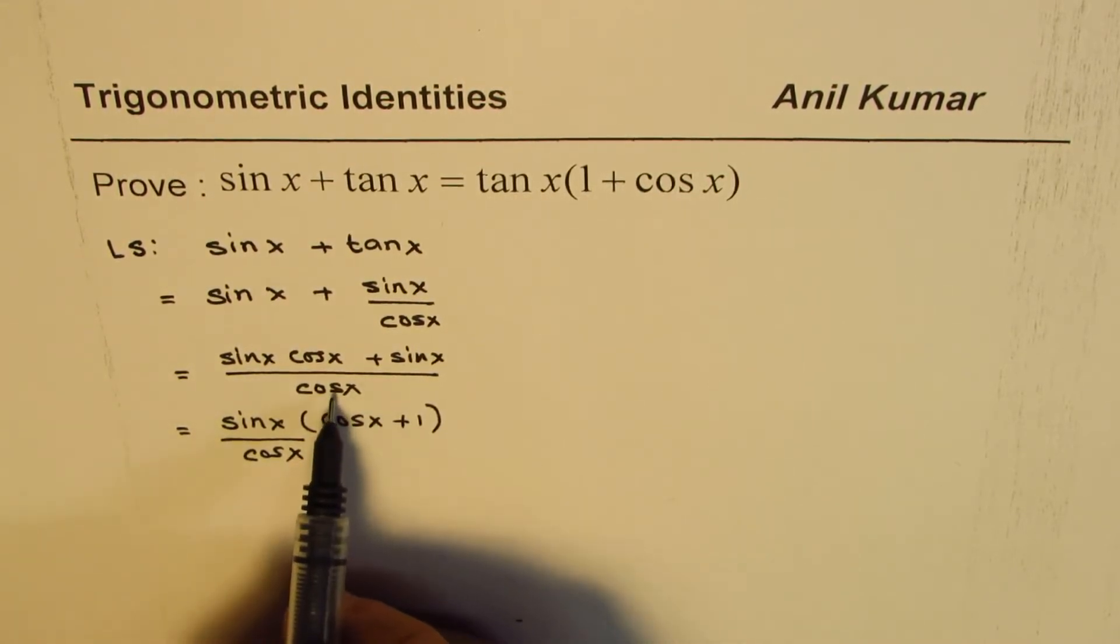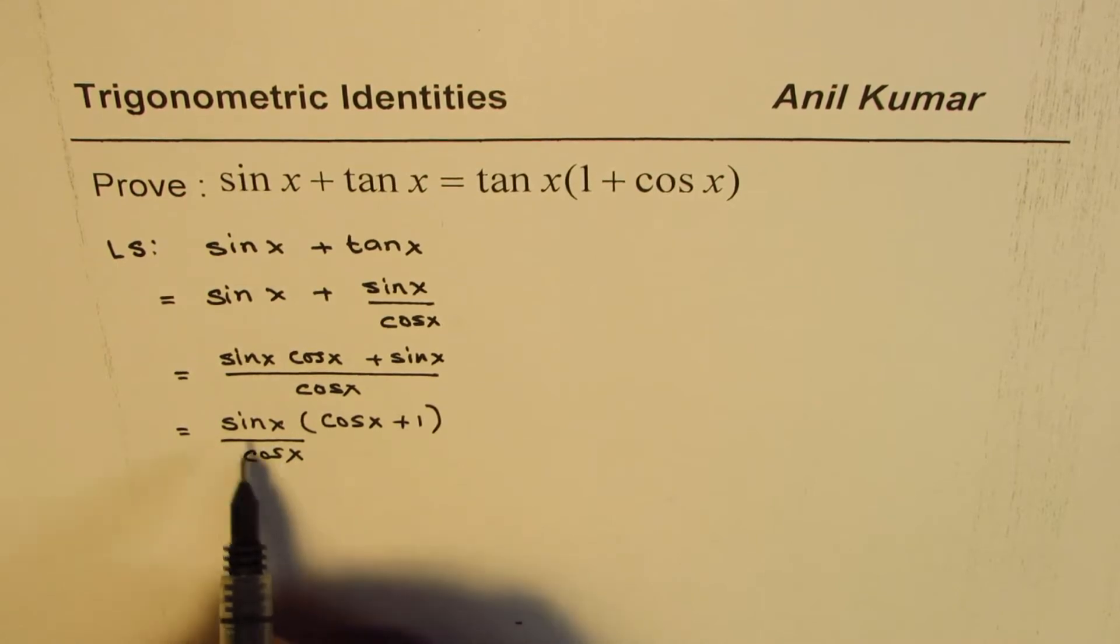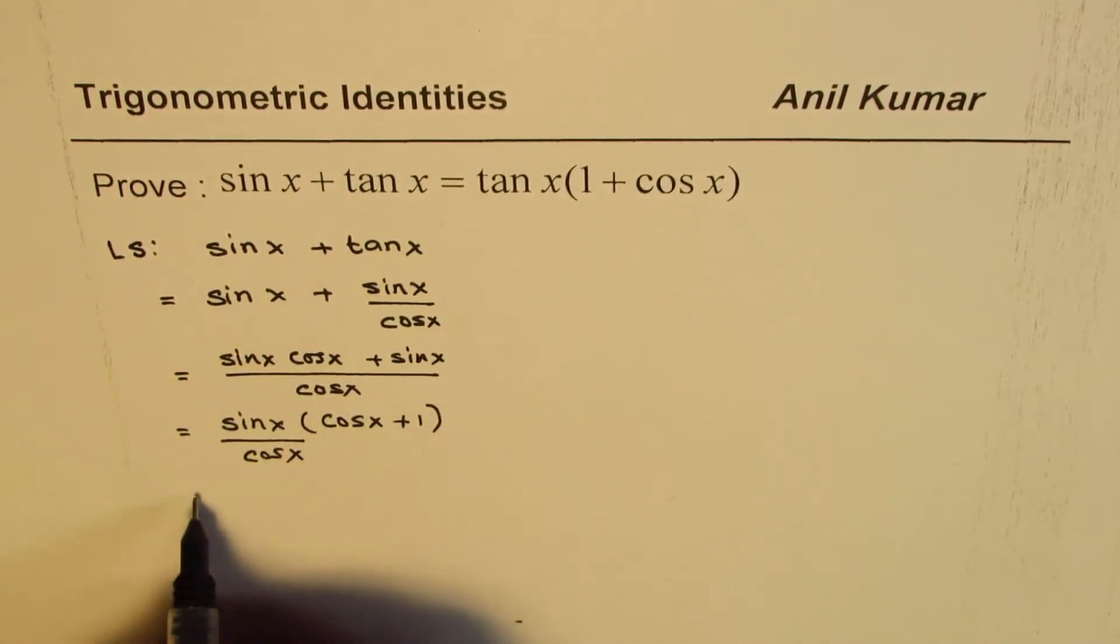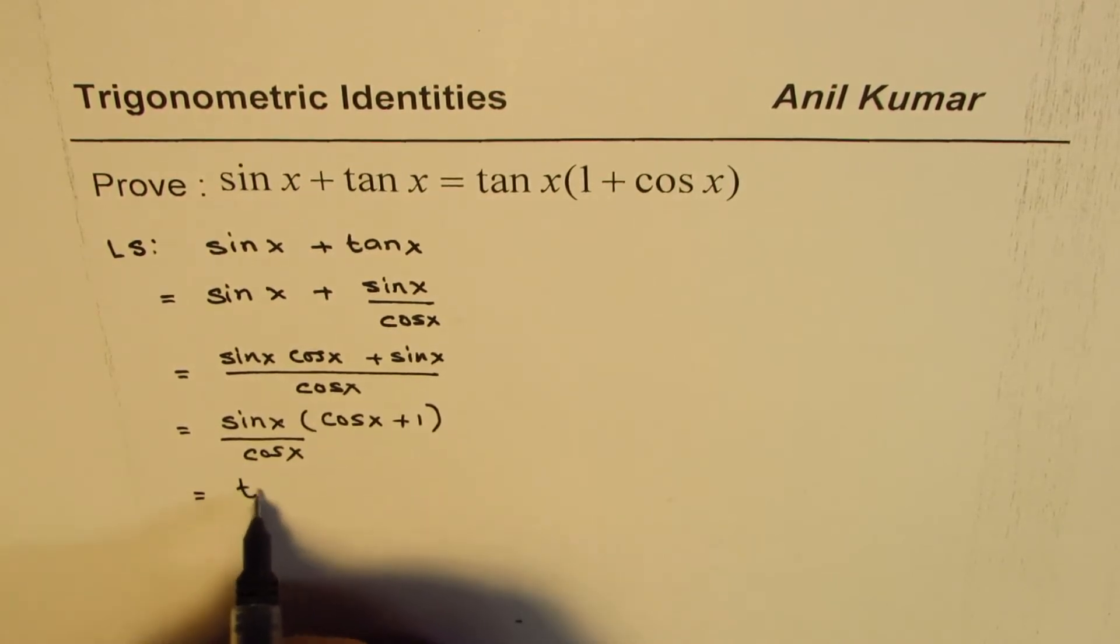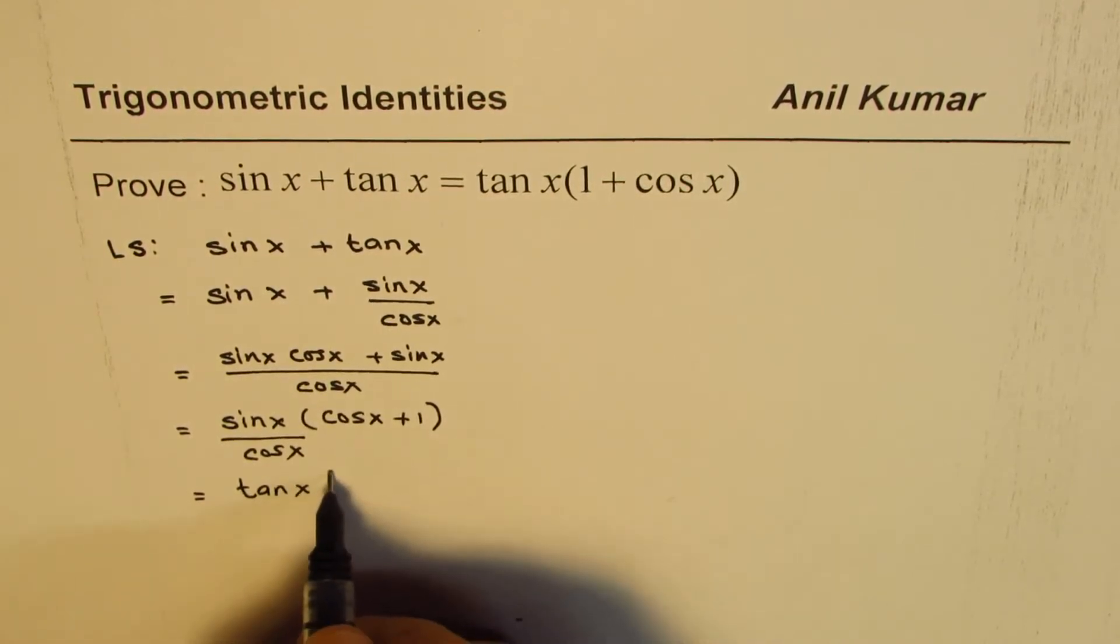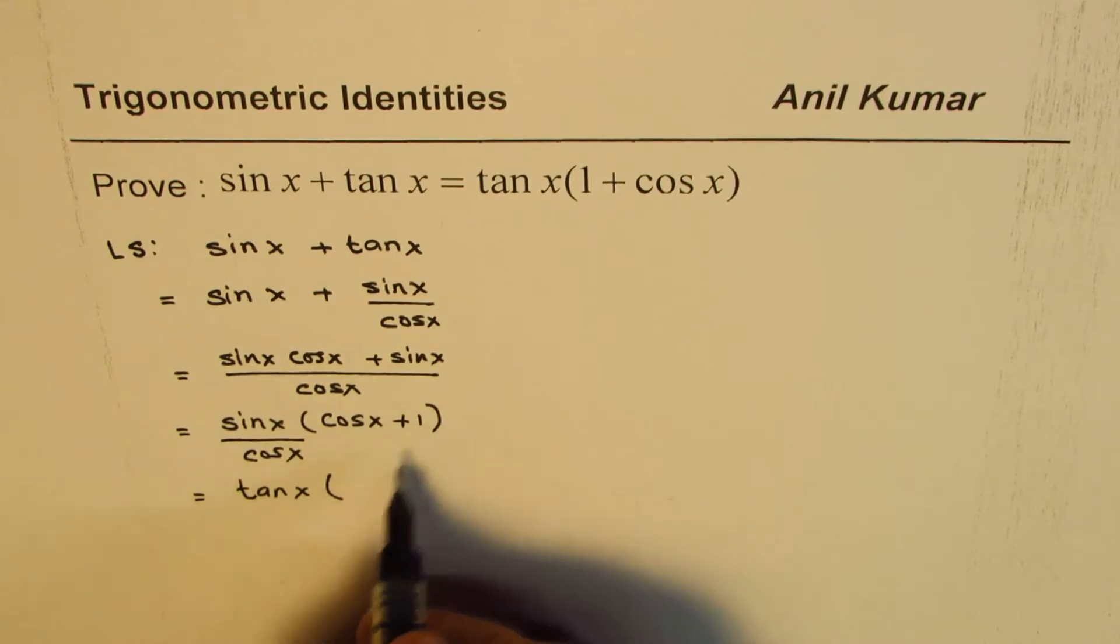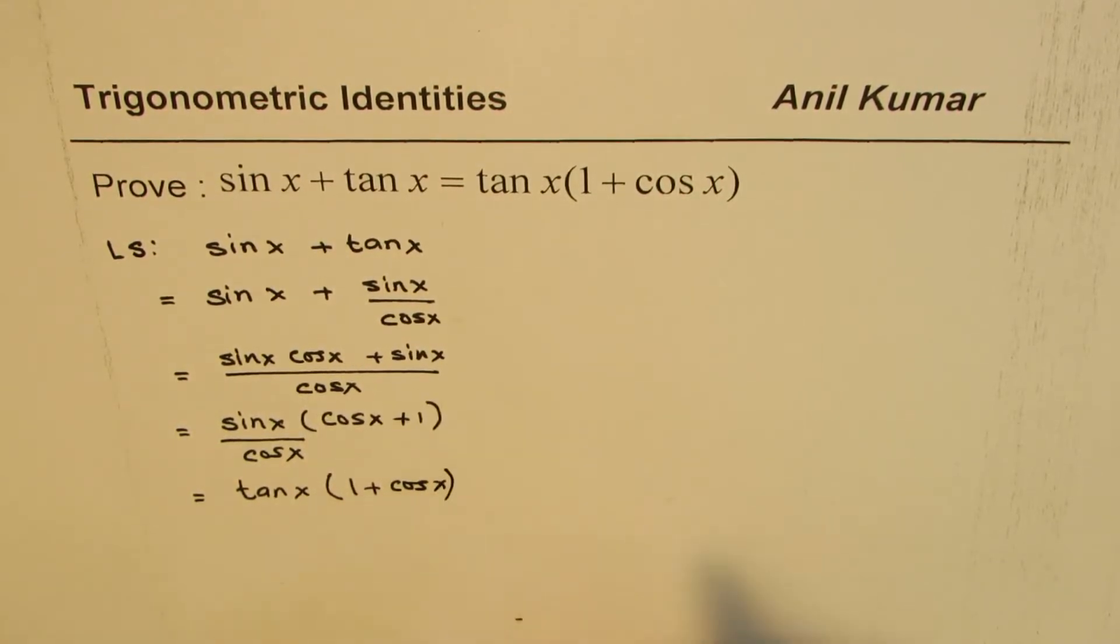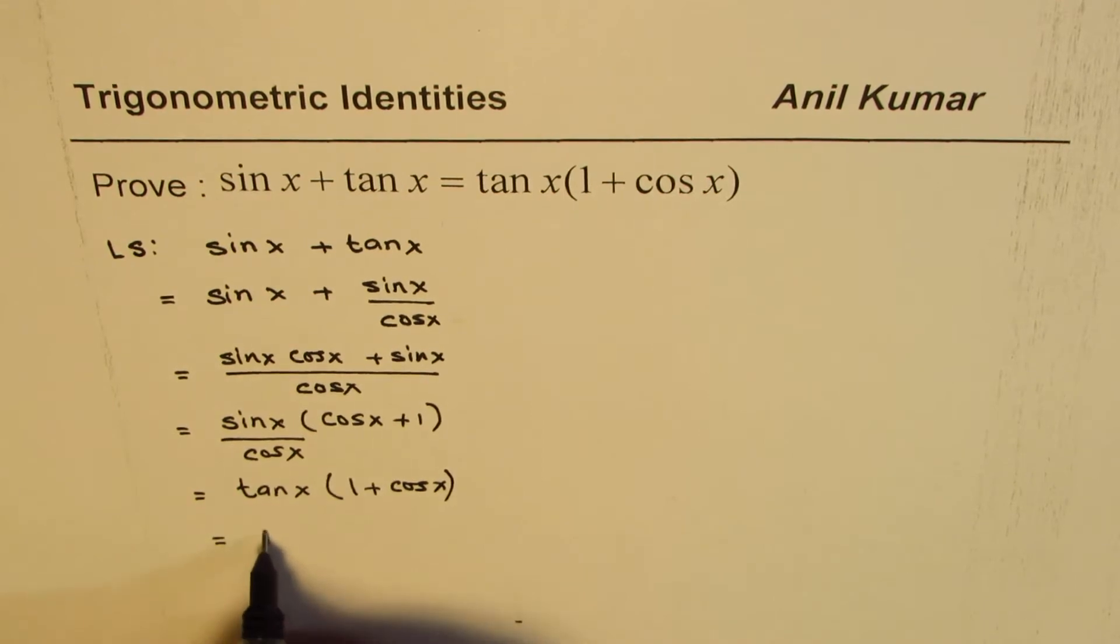So purposely I'm writing this cos x under sin x. That gives you an idea that it is tan x. So we could write this as tan x times cos x plus 1 or 1 plus cos x. Which is same as the right side. So that is how you could prove this identity starting from the left side.